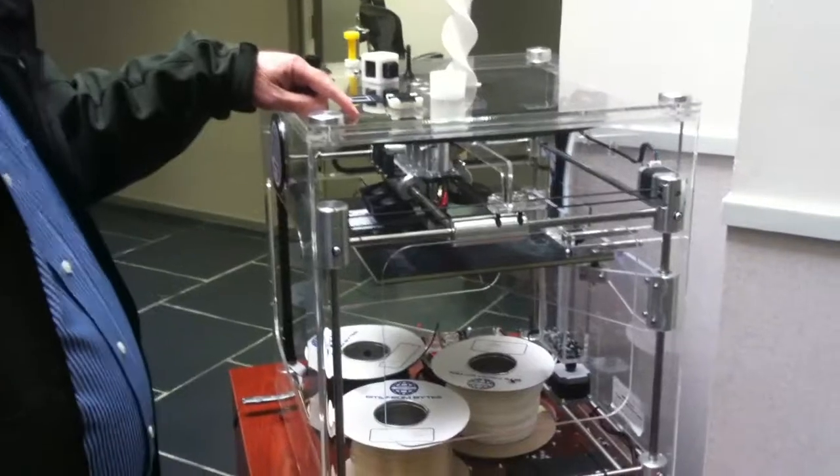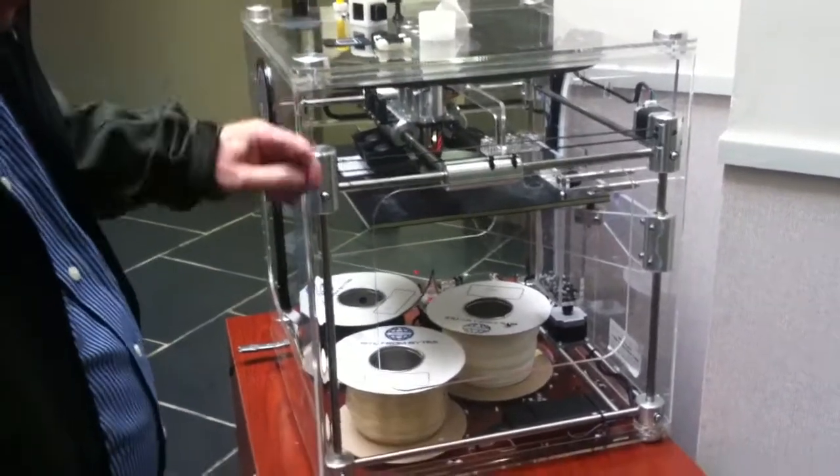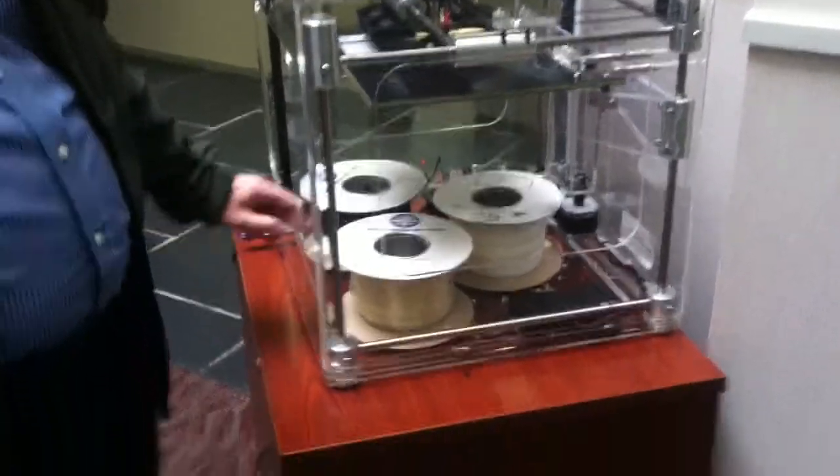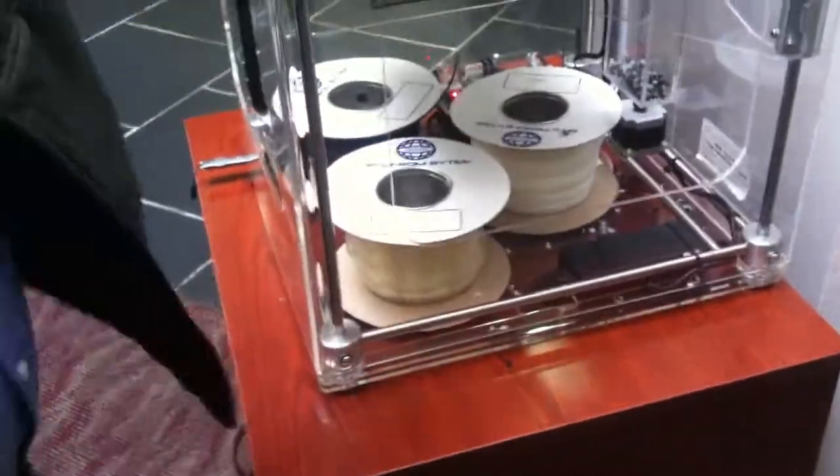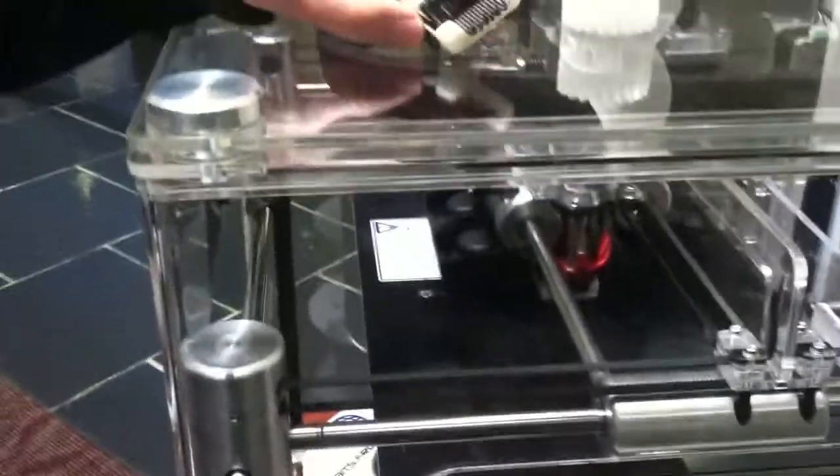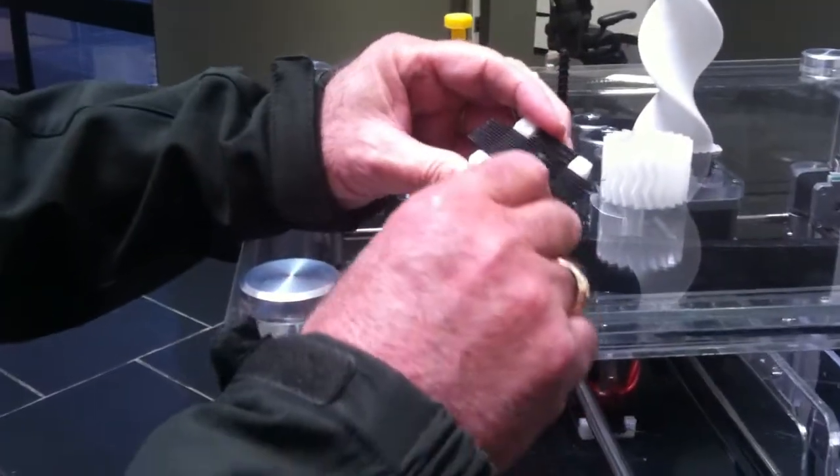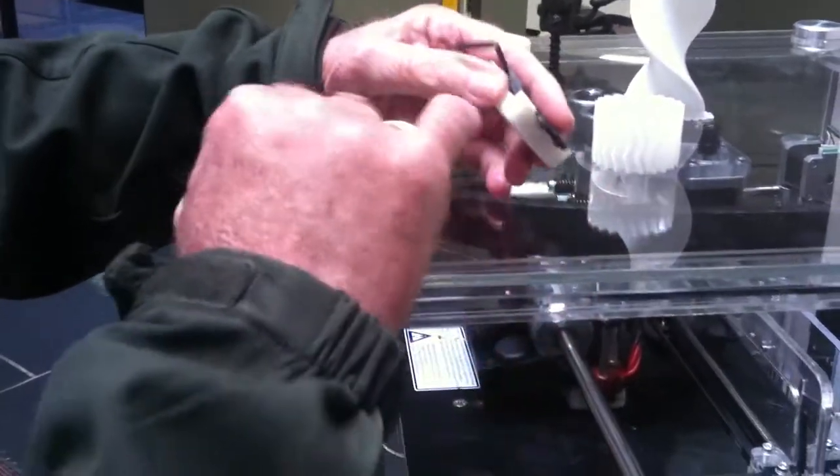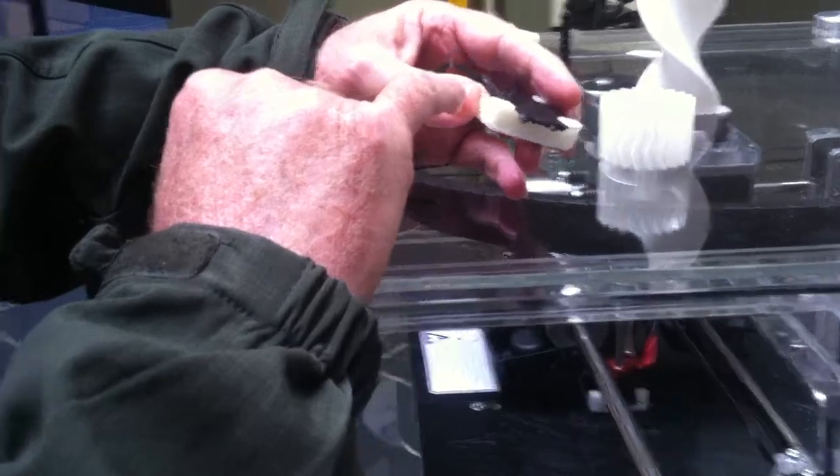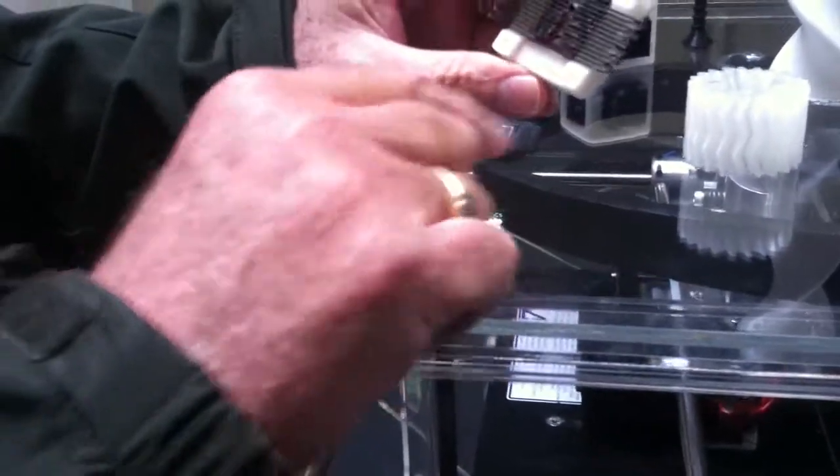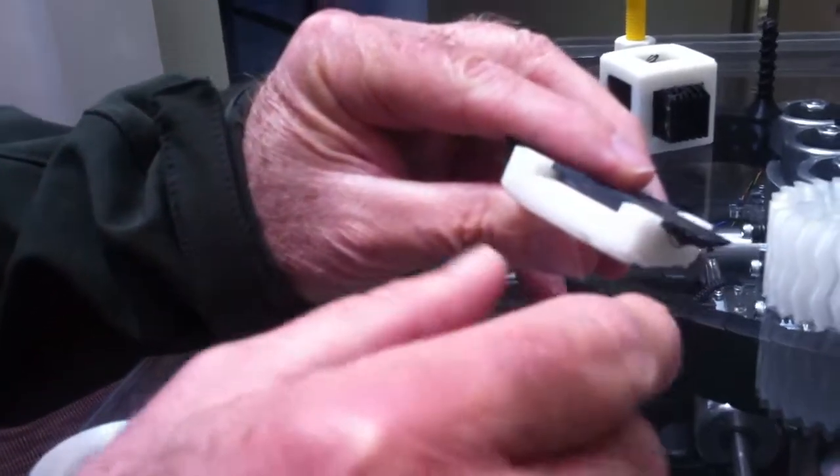It's a 3D printer, and what it's doing is taking this plastic up through the tubes, heats it up, and lays it down in layers, one layer at a time. So if you take a look at this, you can't see much probably on the film, but it goes through one layer at a time, laying down the plastic.